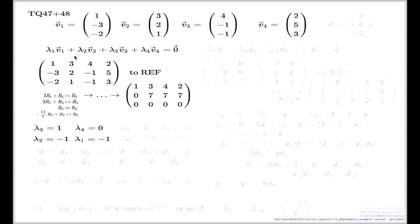As I said, if you could by any miracle come up with those four numbers at the beginning without any computation, you could stop right there. But most of us don't have such a miraculous guessing machine — that's why we develop methods to find these coefficients. Row echelon form is one such method.